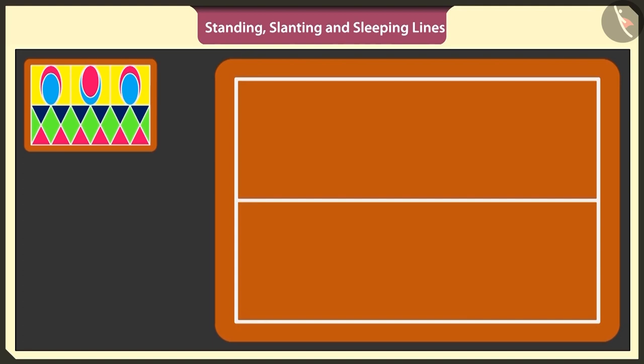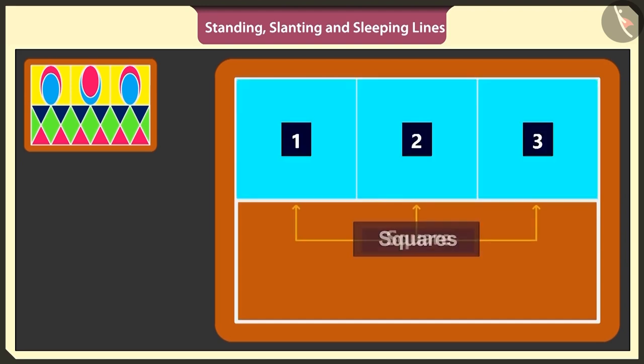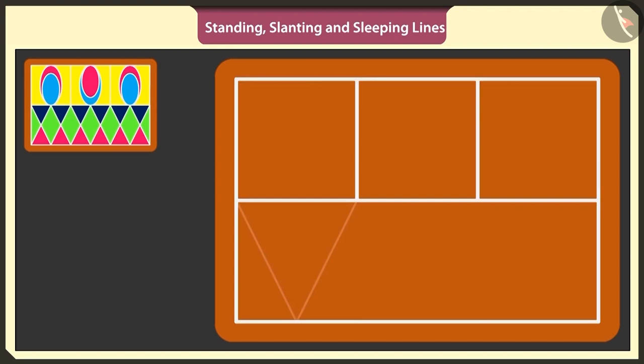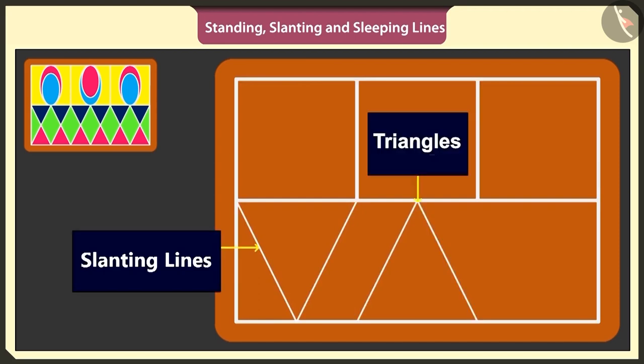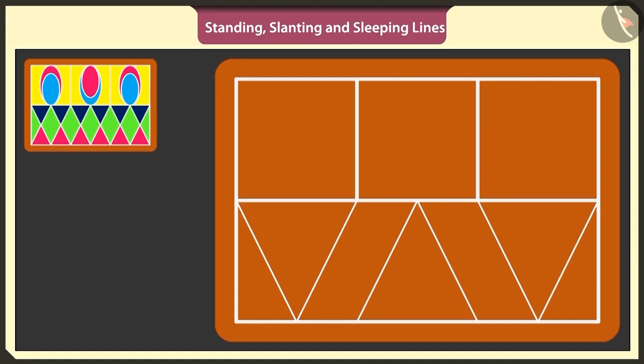Yes, now we have two rectangles. Draw two standing lines in the above rectangle and make three such small squares. Now under these three squares, I will draw three triangles, just like this. I will use slanting lines to make inverted triangles, just like this.